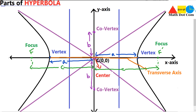The conjugate axis is the axis whose endpoints are the co-vertices. It is labeled here, and these endpoints are the co-vertices of the hyperbola. In comparison to other conics, the transverse axis can be referred to as the major axis and the conjugate axis as the minor axis.